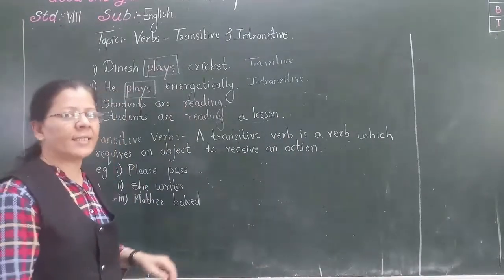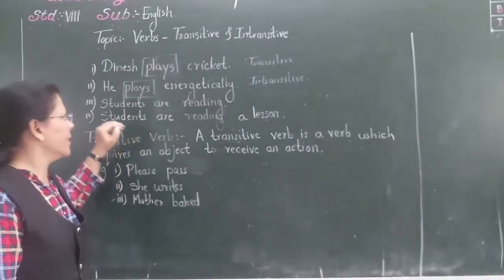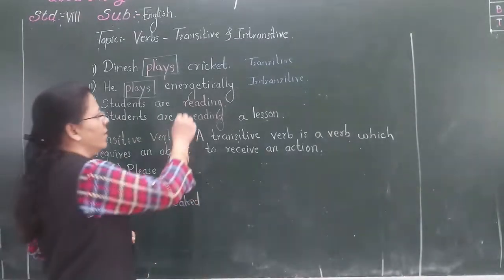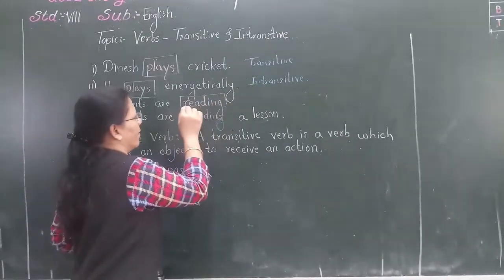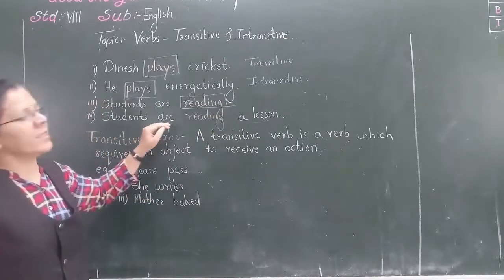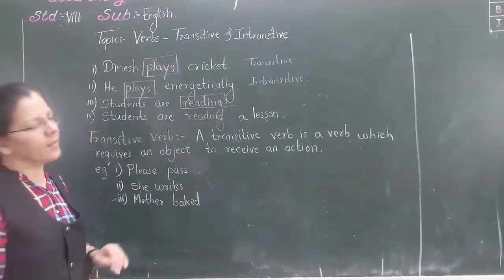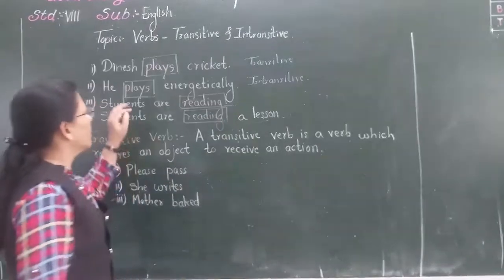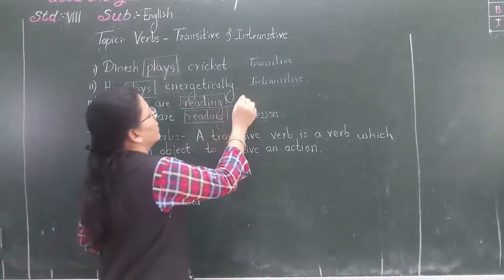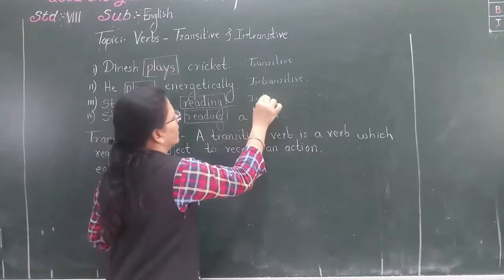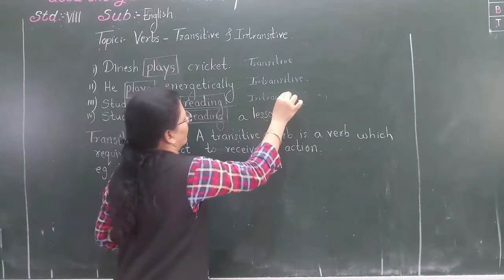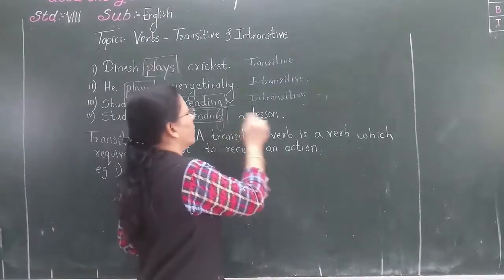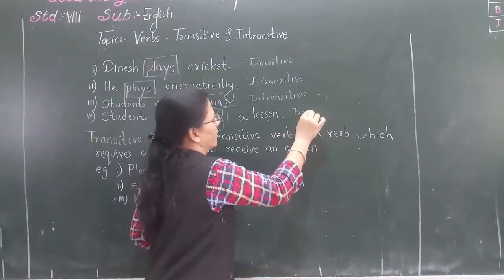Let us see two more examples. 'Students are reading.' Which is the verb? Reading. 'Students are reading a lesson.' Here also the verb is reading. So in the third sentence, the verb reading is intransitive. And in the fourth sentence, the verb reading is transitive.